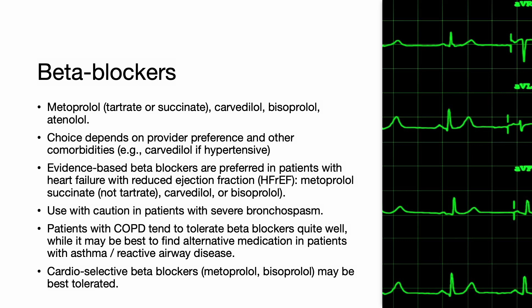For instance, if the patient is also hypertensive, then select carvedilol, which can also help with blood pressure reduction. Evidence-based beta blockers are preferred in patients with heart failure with reduced ejection fraction, and this includes metoprolol succinate — not metoprolol tartrate — carvedilol, or bisoprolol. However, beta blockers have a negative inotropic effect and should be used with caution in patients with acute heart failure or severe bronchospasm. Patients with COPD tend to tolerate beta blockers quite well, while it may be best to find an alternative in patients with asthma or reactive airway disease. Cardioselective beta blockers like metoprolol and bisoprolol may be best tolerated.